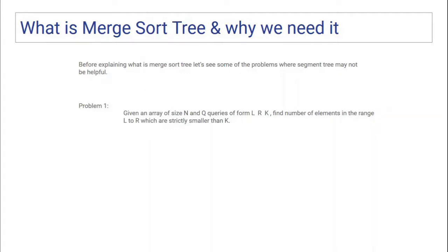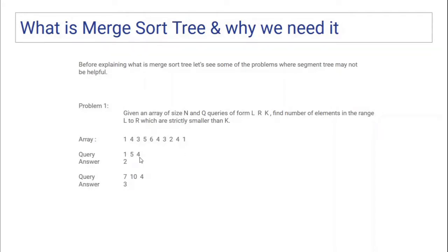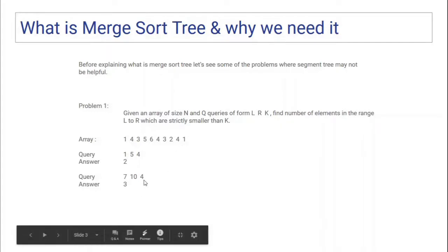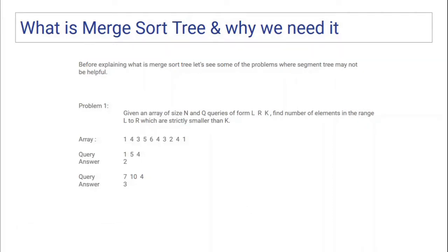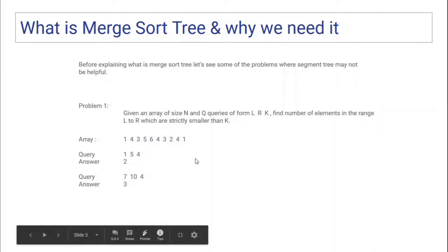Try to answer this problem in O(log n) time or even O(log² n) time per query, because the way I will explain using merge sort tree requires O(log² n) per query. For example, given this input array, for the range one to five, how many elements are strictly smaller than four? From the first five elements, there are two elements — one and three — which are strictly smaller than four, so the answer is two. For the range seven to ten, three elements — three, two, and one — are strictly smaller than four, so the answer is three. This is the first type of problem. Pause the video and think whether segment tree can solve this.